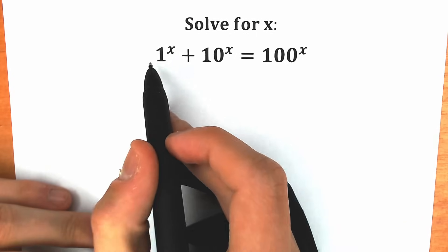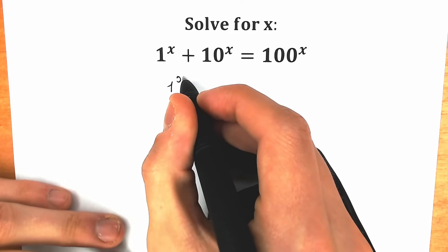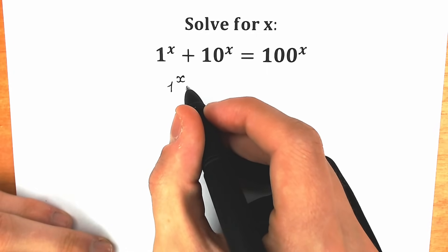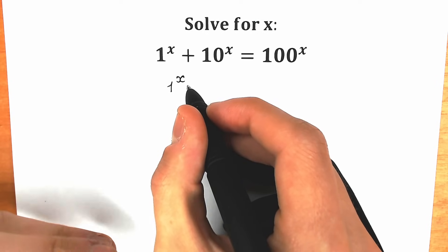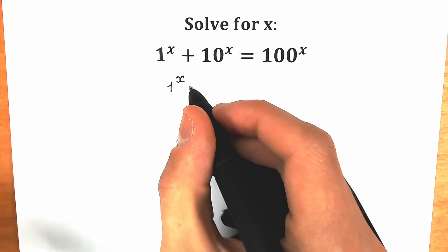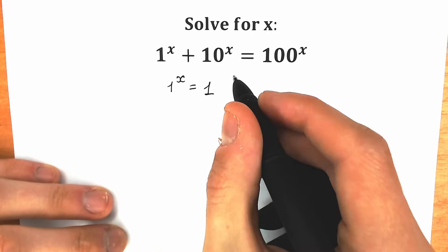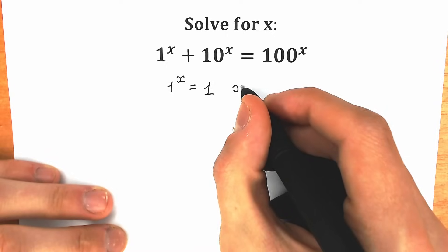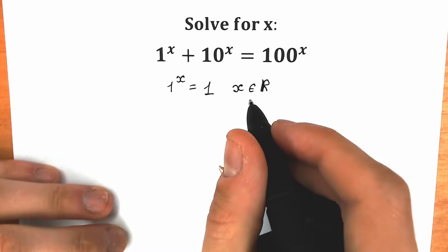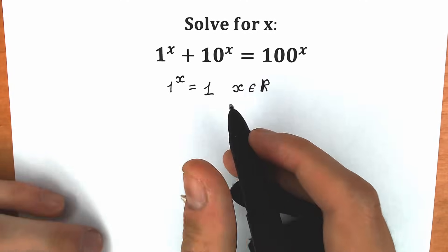First of all, here is the main thing: 1 to the x. We are talking about real numbers. In terms of real numbers, 1 to the x equals 1. Whether it's 1 to the power 100, 200, 1000, or 1,000,000 — it all equals 1. So in terms of real numbers, 1 to the x equals 1.